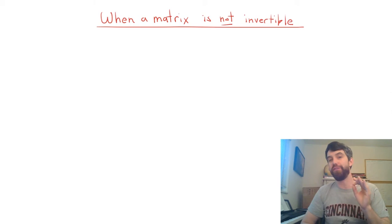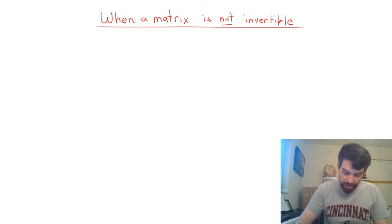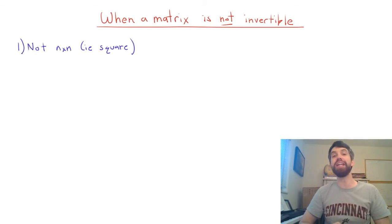So in this video we're going to talk about a few different ways whereby you might not have an invertible matrix. The first of them, the sort of easiest just to glance out and get an answer, is whether your matrix A is square.